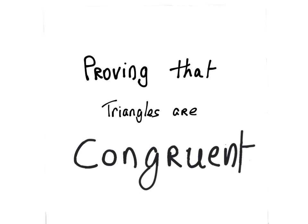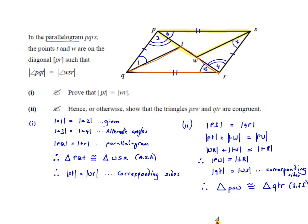This video is going to show you how to deal with an exam question that asks you to prove that triangles are congruent. Here we have an example of such a question. In the parallelogram PQRS, the points T and W are on the diagonal PR such that the angle PQT is equal to the angle WSR.